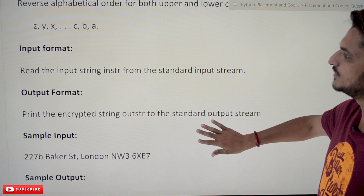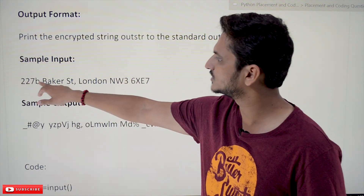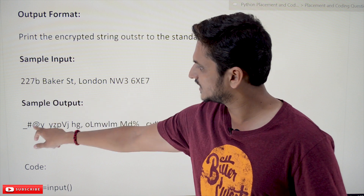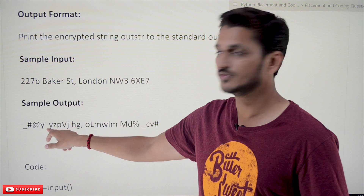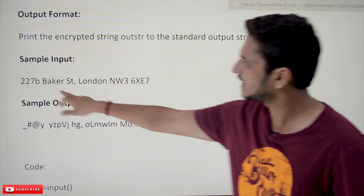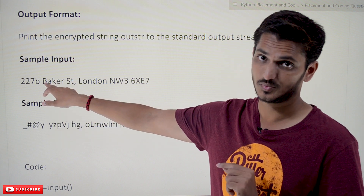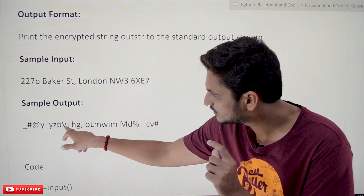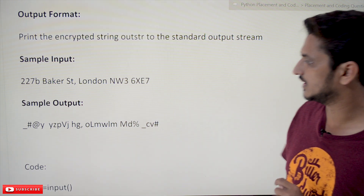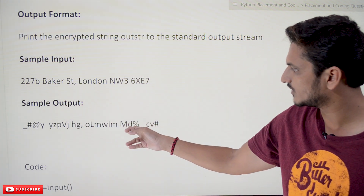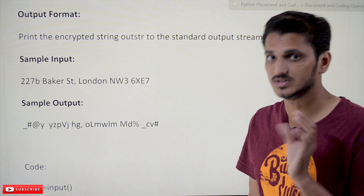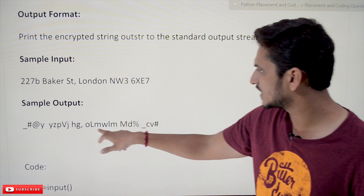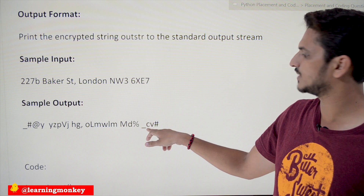The sample input string is '227b...' and it is converted to an output. The first '2' is replaced with underscore, the second '2' with hash, the third '7' with at-the-rate, 'b' is replaced with 'y' (reverse order), and space is kept as-is. Every fifth character is placed with a capital letter — count one, two, three, four, and the fifth one is capitalized. Digits repeat the symbol cycle: the fifth digit is again replaced with underscore.